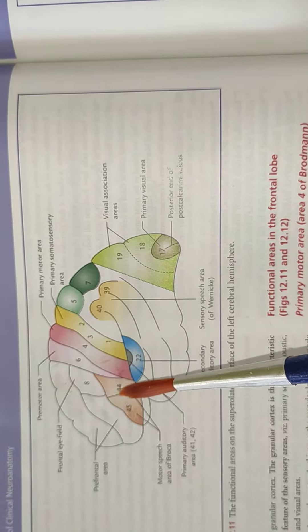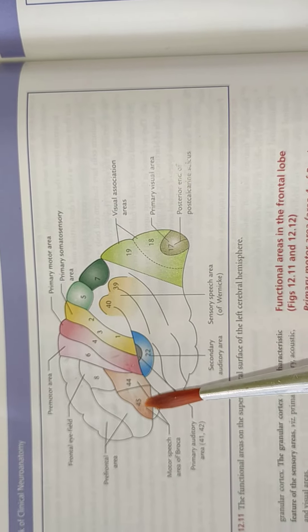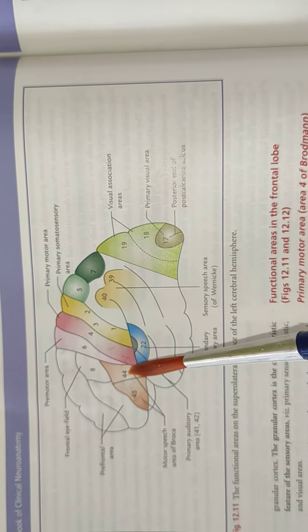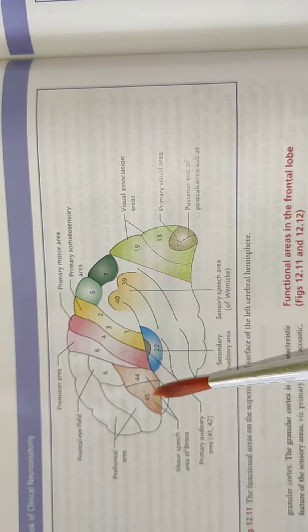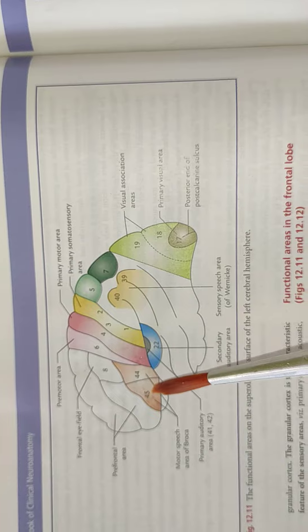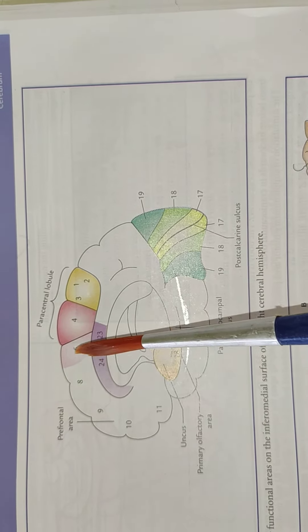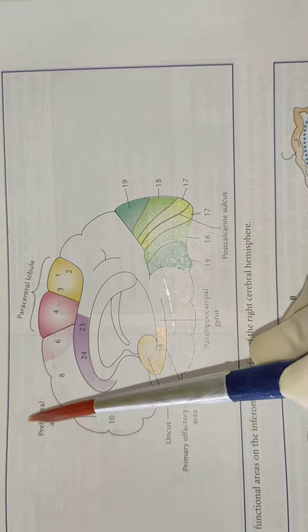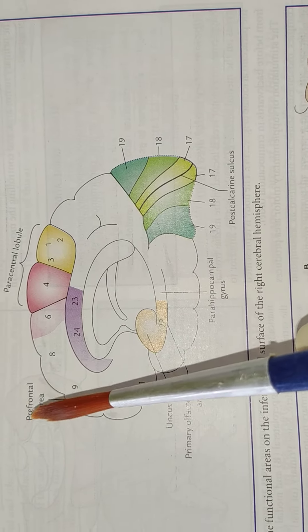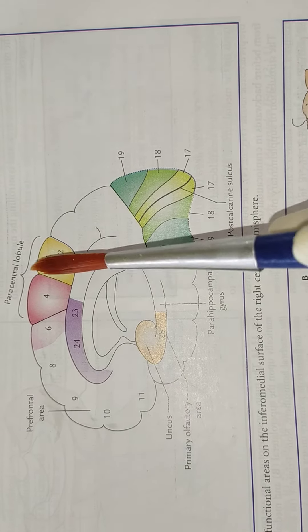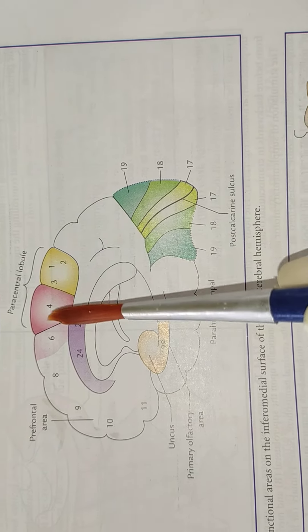This is the inferior frontal gyrus. In this, there is area number 45 and 44 — these are the motor speech areas of Broca. This is the medial surface of the cerebral cortex, and this is the medial frontal gyrus. In this we can see the pre-frontal area. This is the paracentral lobule.